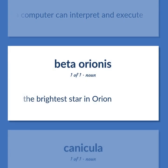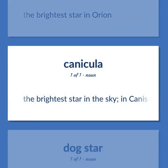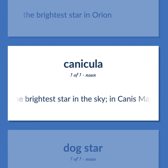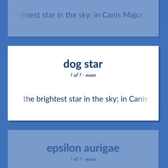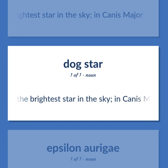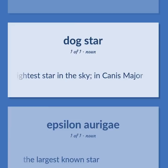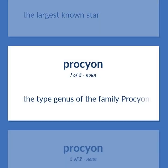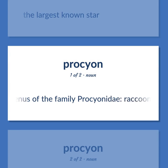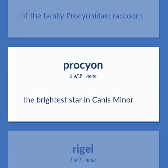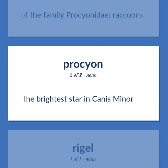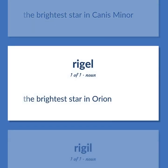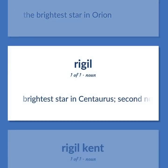Rigel: The brightest star in Orion. Sirius: The brightest star in the sky, in Canis Major. The largest known star. The type genus of the family Procyonidae — raccoons. Procyon: The brightest star in Canis Minor. Alpha Centauri: Brightest star in Centaurus, second nearest star to the sun.